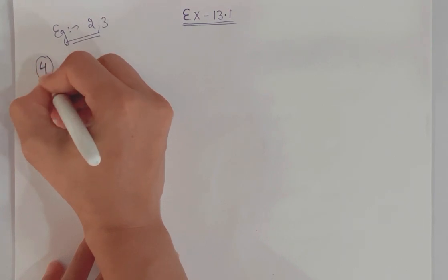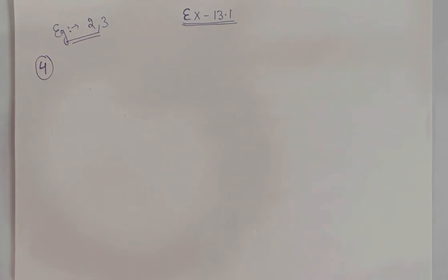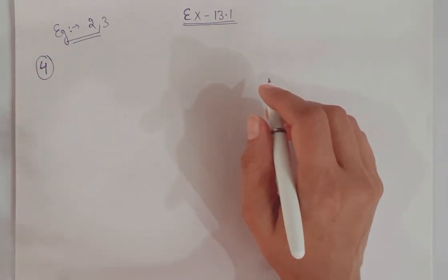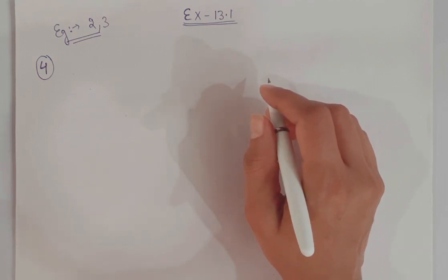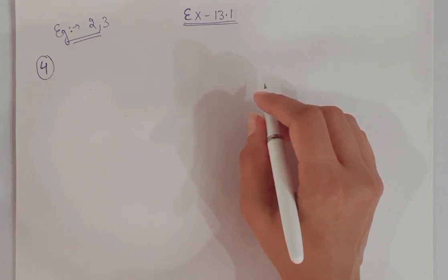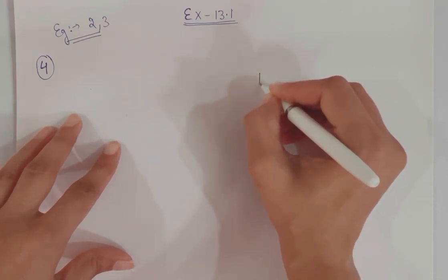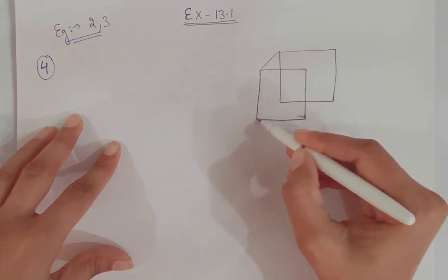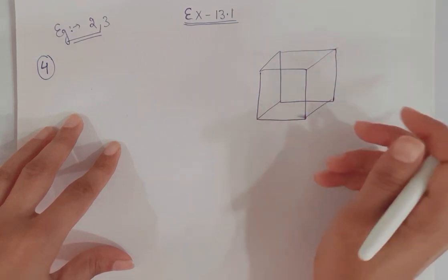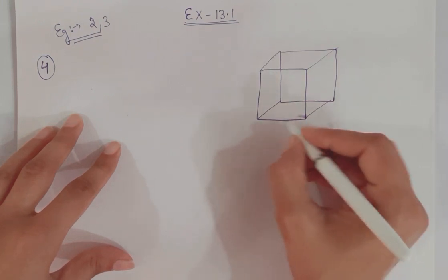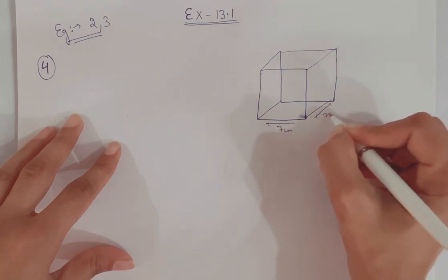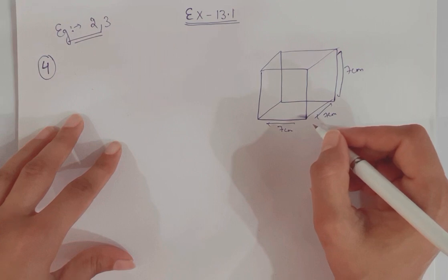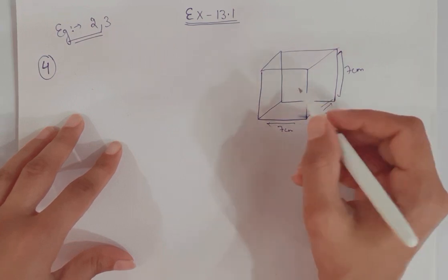The first important question of this exercise is question number 4. In this chapter, all questions are statement-based, so we don't just read the statement — we need to study the figure and then apply the formula accordingly. Question 4 says: a cubical block of side 7 centimeters. Let me draw it for you. It's a cube, so all dimensions — length, breadth, and height — are equal, each being 7 centimeters.